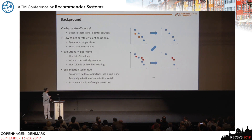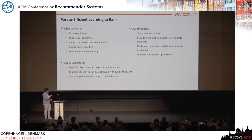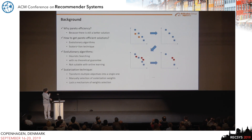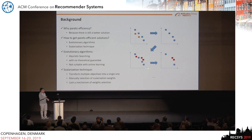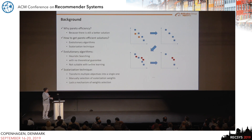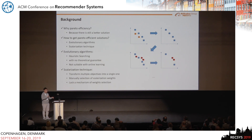Now we know the motivation for getting Pareto-efficient solutions, but how can we get them? There are two mainstream approaches. The first is evolutionary algorithms and the second is scalarization. Evolutionary algorithms work as a heuristic search process — they're good, but they have no theoretical guarantee and are not suitable for online learning. For the scalarization technique, it transforms multiple objectives into a single one by assigning scalarization weights, but it requires manual selection of those weights with no mechanism for doing so.